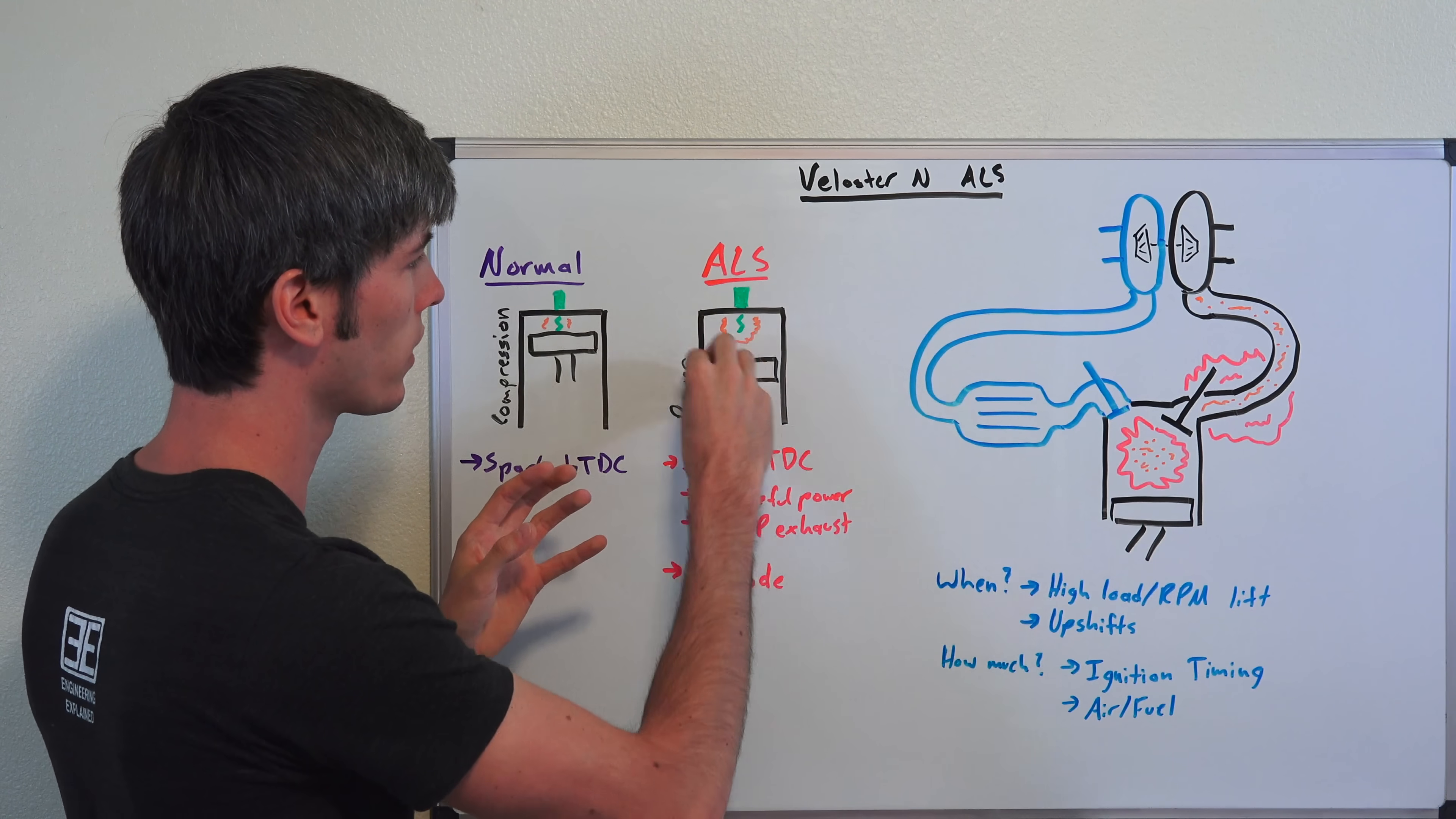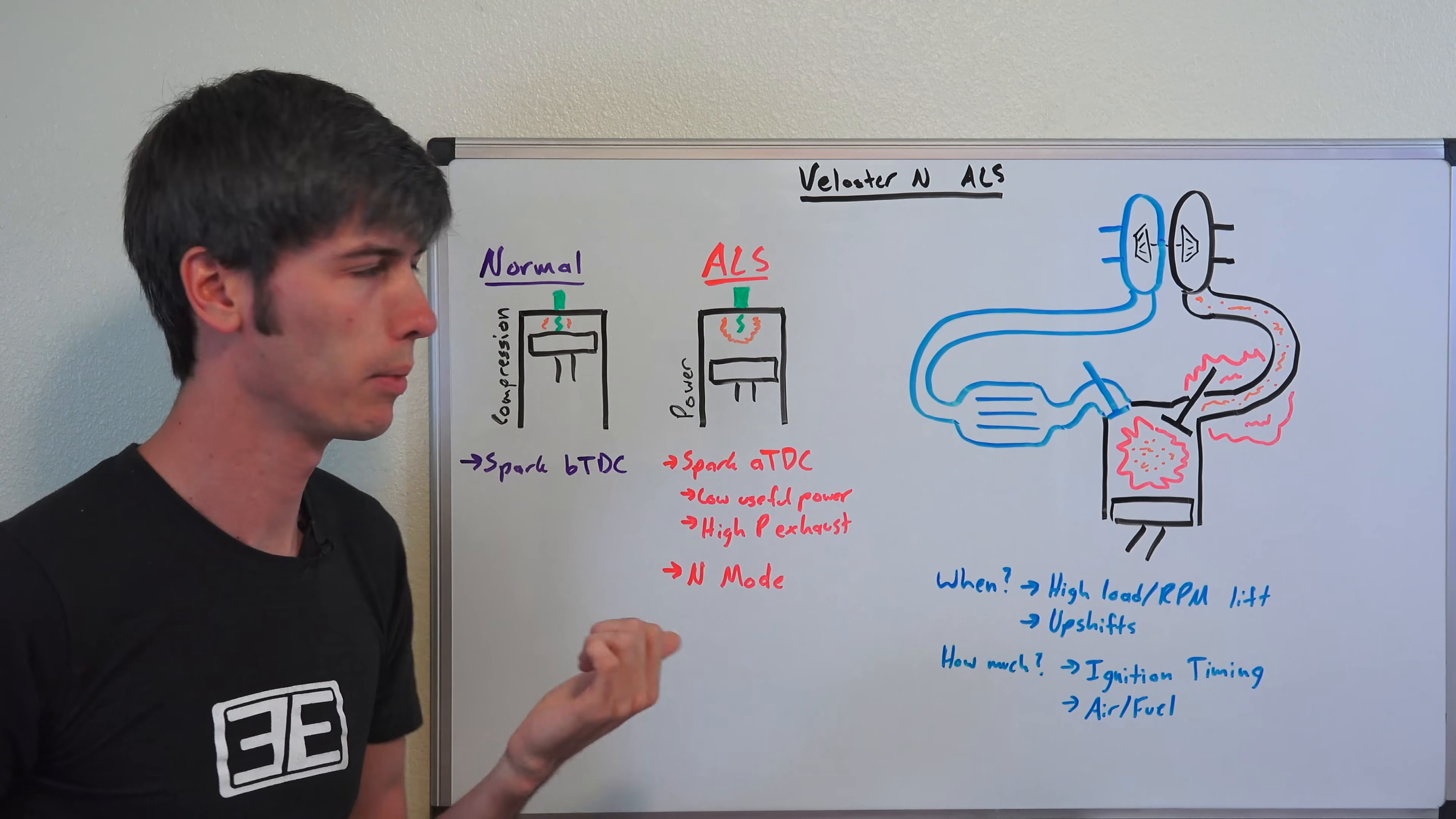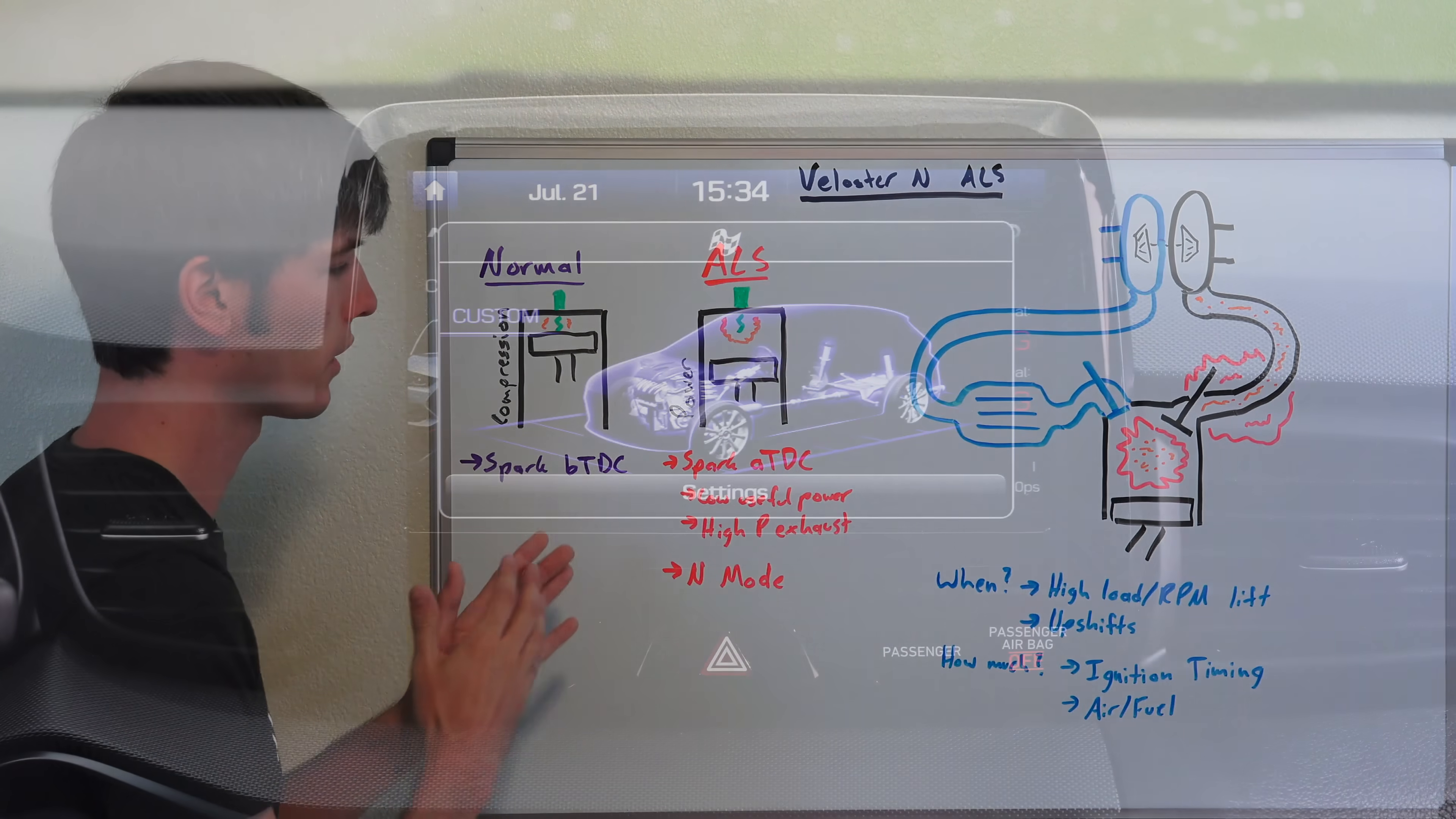That's what it's doing: instead of having high pressure to push that piston down, it's having high pressure to keep that turbocharger spooled up. Then once you get back on the throttle it goes back to that normal ignition timing so that you can maintain power. It's to keep high pressure in the exhaust, not to create useful power.